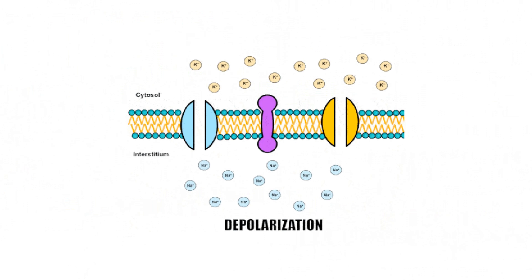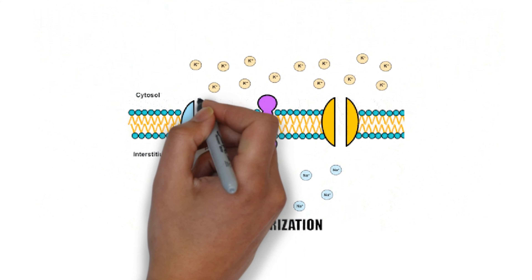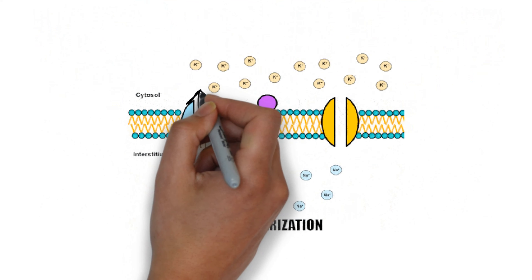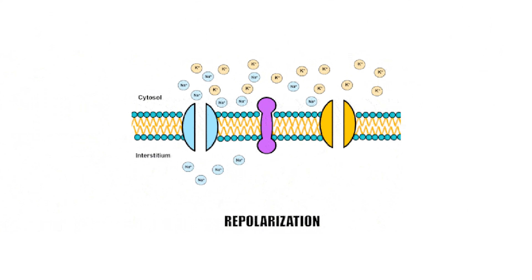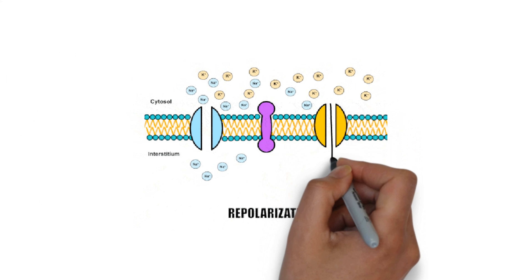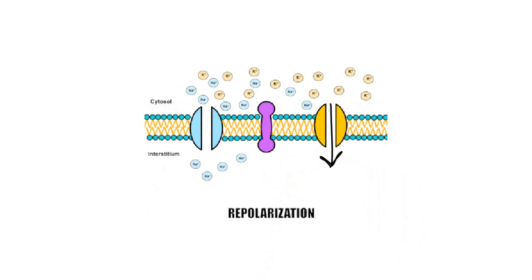This is the depolarization stage. As you can see, there are sodium ions outside the cell membrane which travel through the sodium channels, making the potential positive. This is the repolarization stage — this is the time when potassium ions leave to the exterior of the cell through the potassium channels, making the potential return to negative.